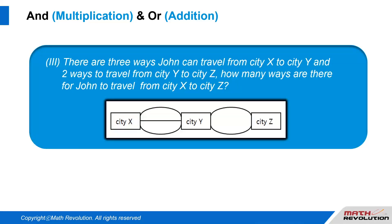There are three ways John can travel from City X to City Y, and two ways to travel from City Y to City Z. How many ways are there for John to travel from City X to City Z?